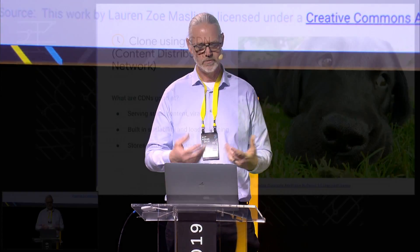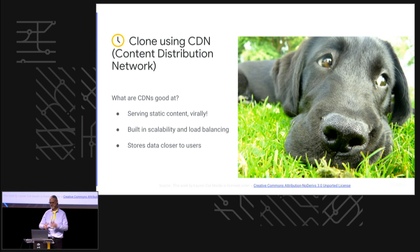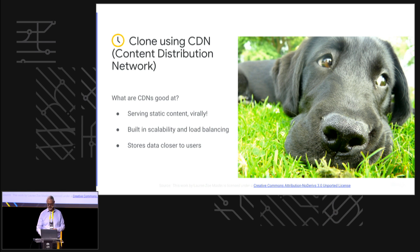The second feature I want to talk about is a work in progress — a proposal made on the Git upstream list that's been well received. We think this is going to happen. Let's talk about why using a content distribution network is important. CDNs are really good at handling high peak volume loads. They are very good at scaling up and load balancing, and also do a good job of moving content close to where the user is requesting the data.